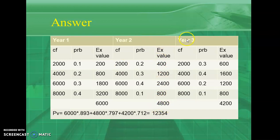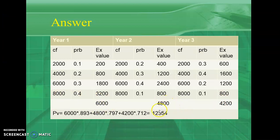For Year 3, do the same: 2000 × 0.3 = 600; 4000 × 0.4 = 1600. Find the sum of all these cash flows — that is 4200. So you now have three expected cash flows: Year 1 is 6000, Year 2 is 4800, and Year 3 is 4200.